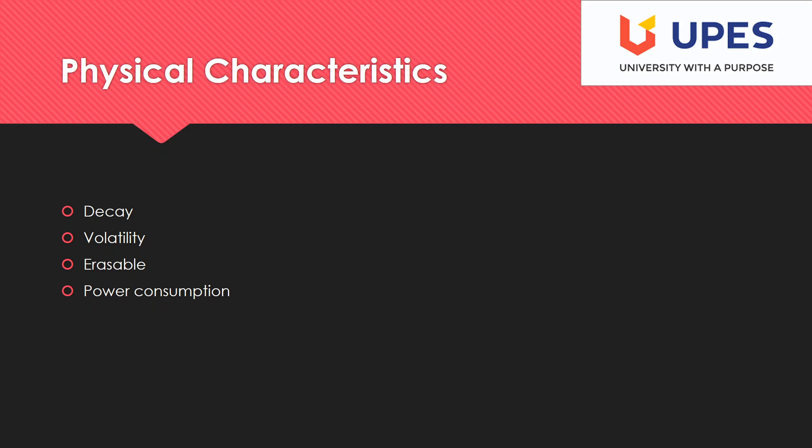Volatility means whether data requires power supply to be retained or not. RAM is volatile storage; secondary storage is non-volatile storage. Erasibility — we will study erasibility in the context of ROMs only, because ROM requires this kind of concept.